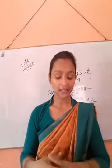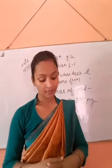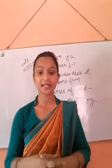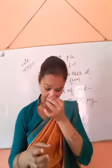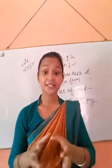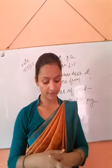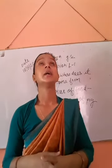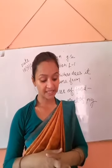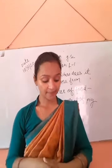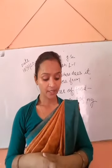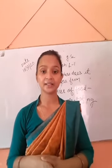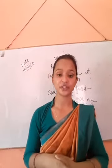Freshwater fishes include katla, labeo, cirrhina, barbas, mystus, and clarias. Seawater fishes include hilsa, catfish, sardines, ribbon fish, red mullet, pomfret and bombil. These are examples of seawater fishes.